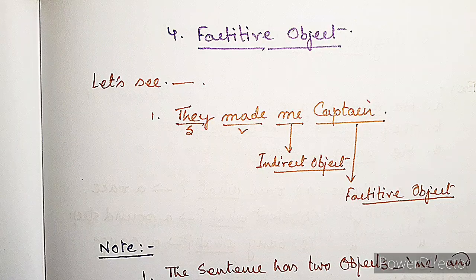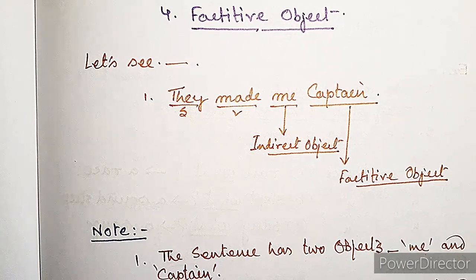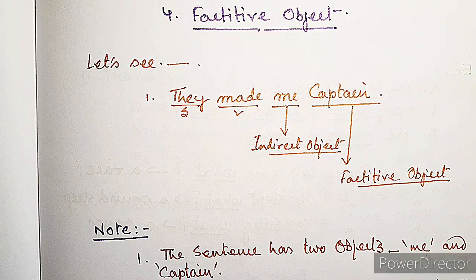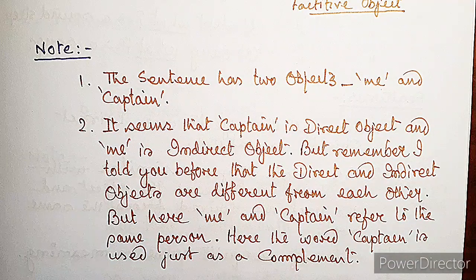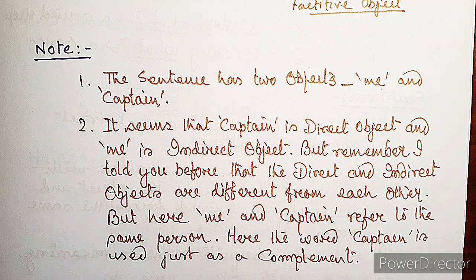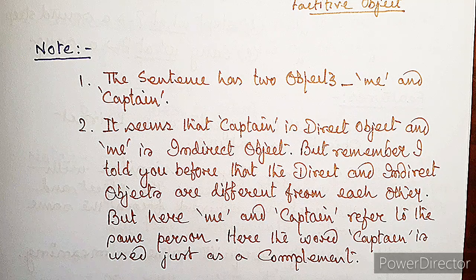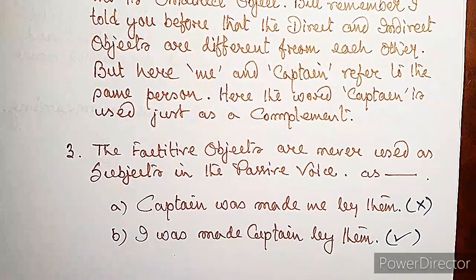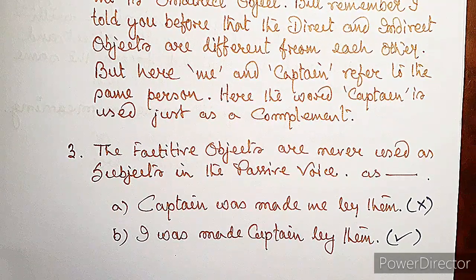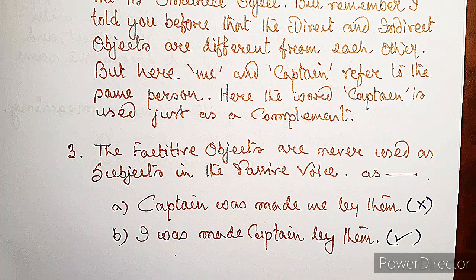A factitive object: in 'They made me captain', the subject is 'they', the verb is 'made', 'me' is the indirect object, and 'captain' is the factitive object. Though the sentence has two objects, 'me' and 'captain' refer to the same person, so 'captain' is used as a complement. Factitive objects are never used as subjects in passive voice — for example, 'Captain was made me by them' is wrong; the correct form is 'I was made captain by them.'